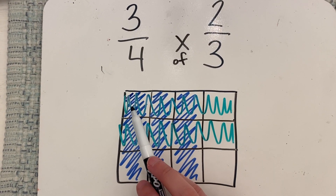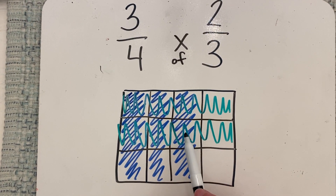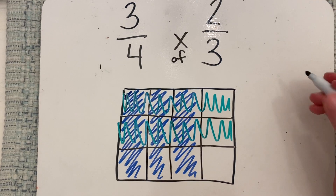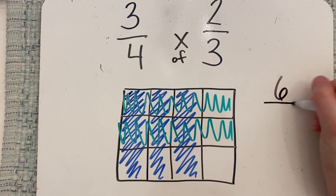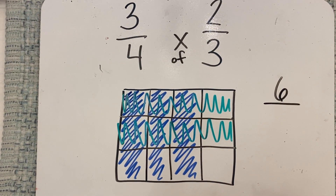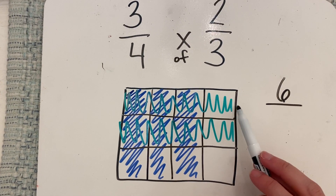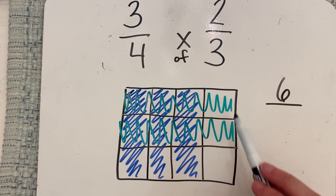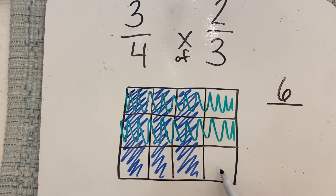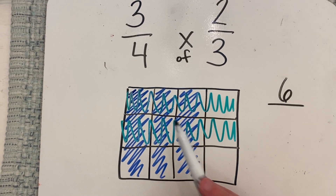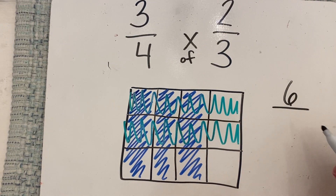What I want to know is how much of this entire box is shaded twice — how much overlapped. So I can count: one, two, three, four, five, six pieces that I shaded both blue and green. And then how many pieces are there total? There's four in a row, and four times three — because there's three rows of four — is 12.